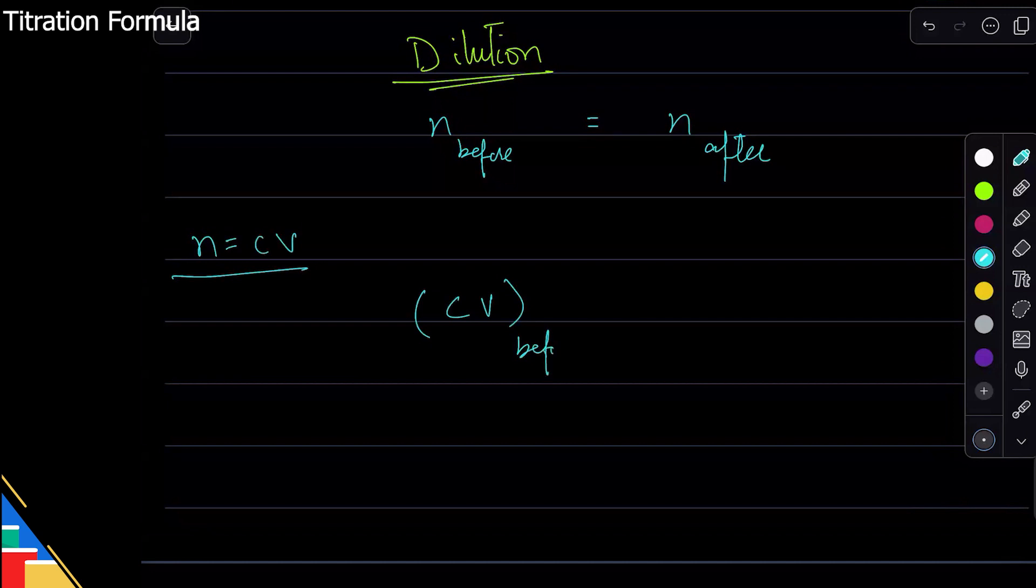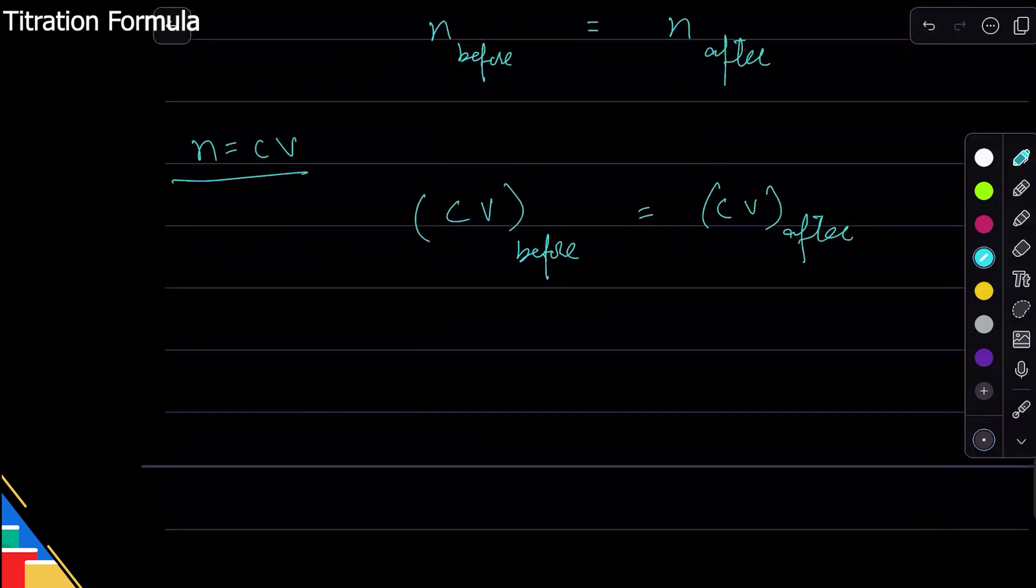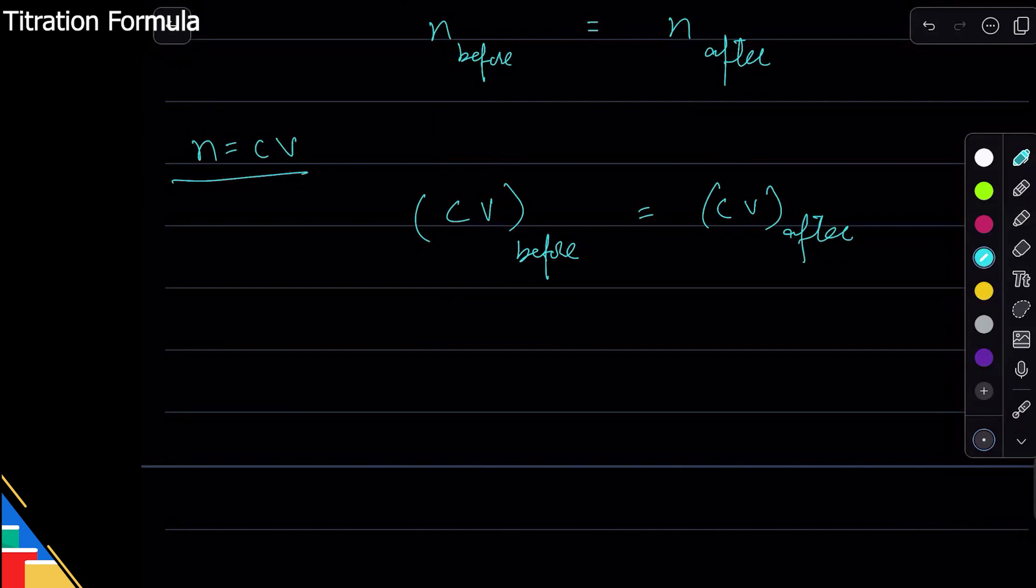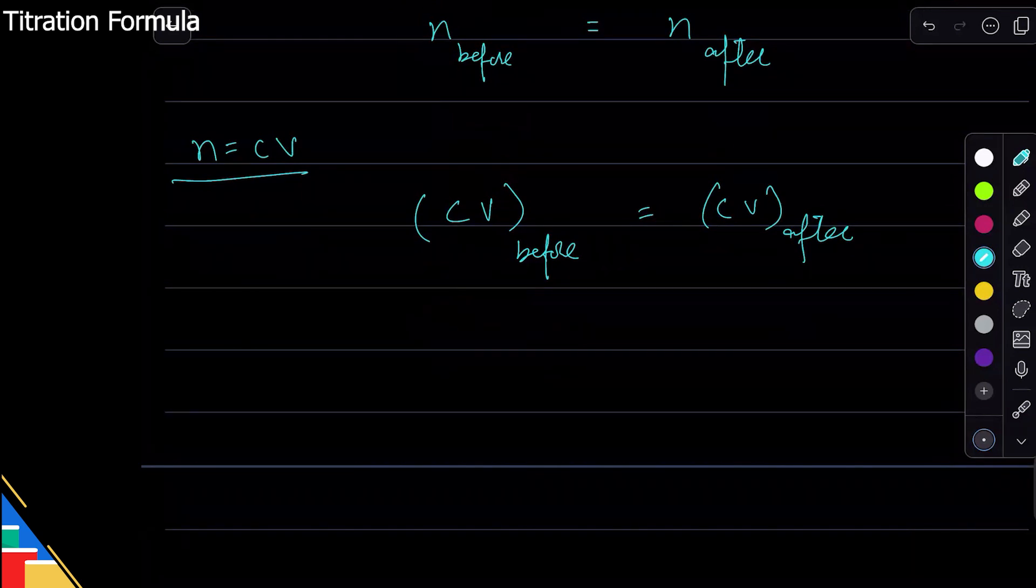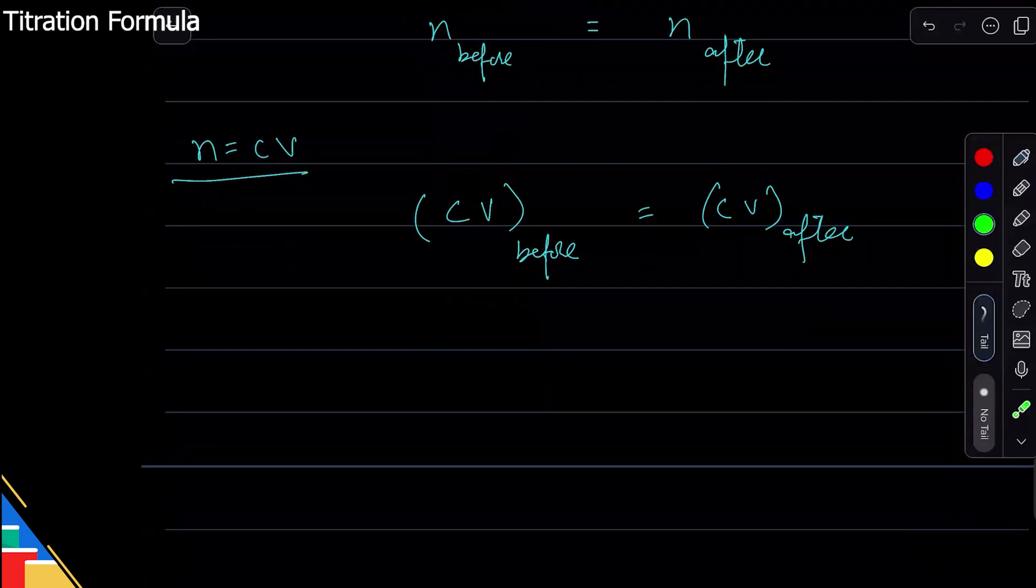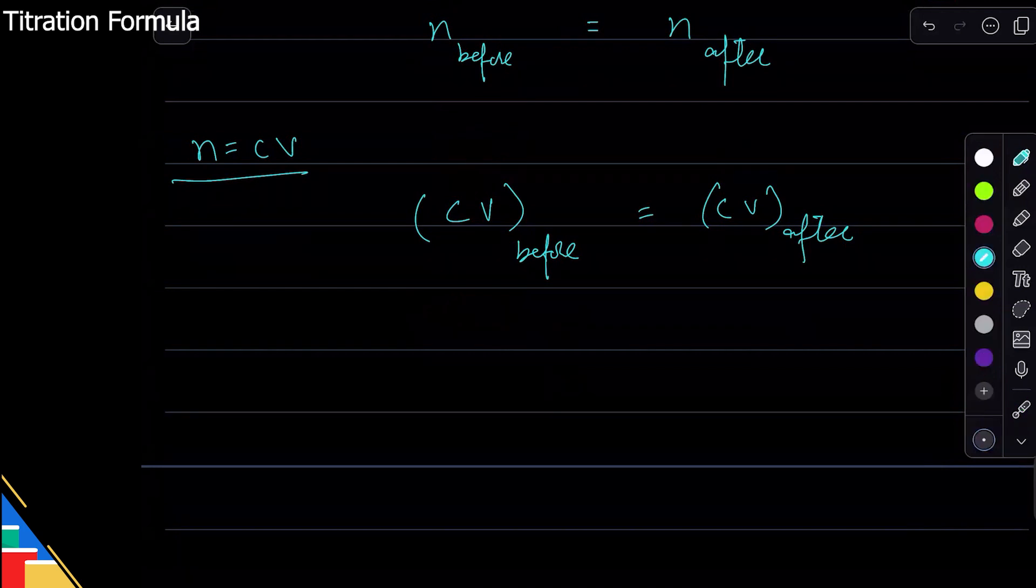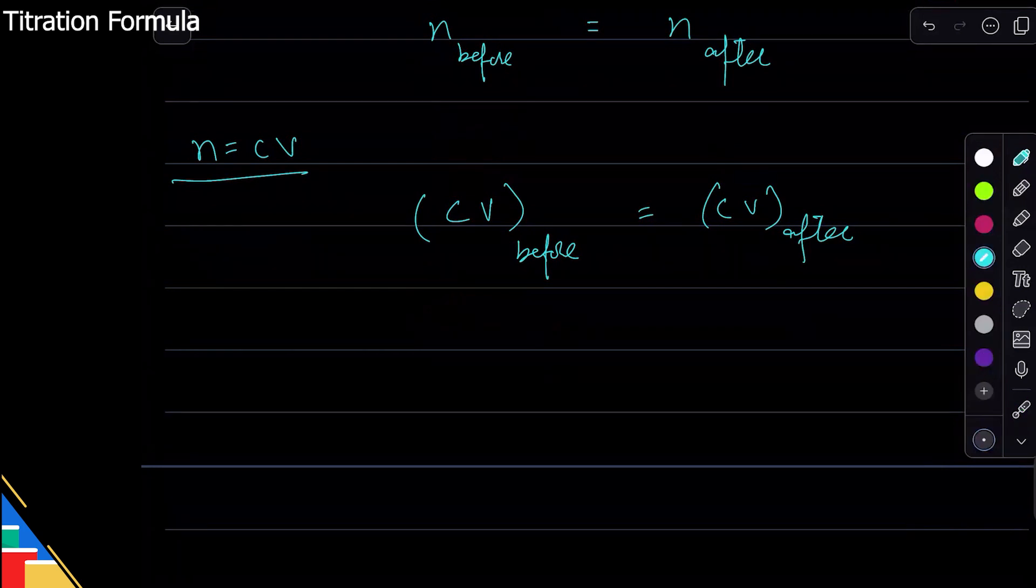It's a solution, so I know that n equals CV. In that case I can say that CV before they added it equals CV after they added. That is useful because now I know that, for example in ATP, they can always be like okay, the solution was made up to 250 cm³ and it was 25 cm³ before. So you can always use that to figure out the concentration or volume after the water is added.